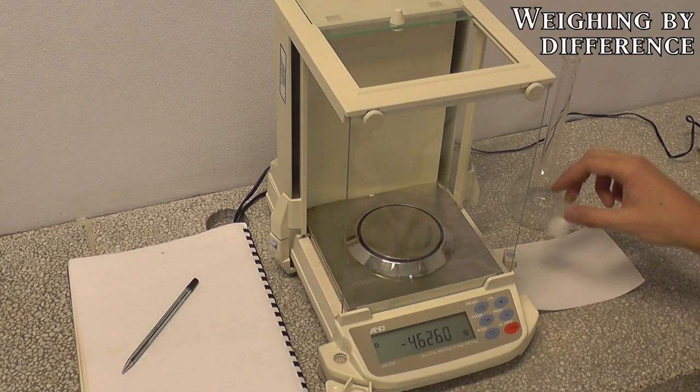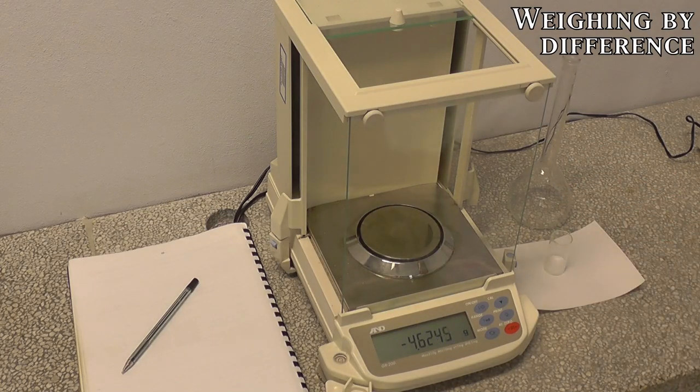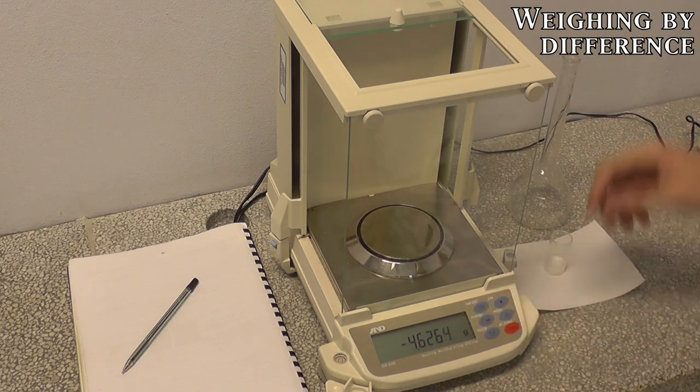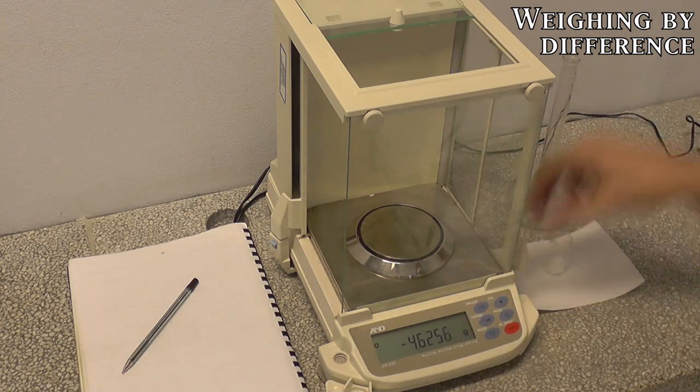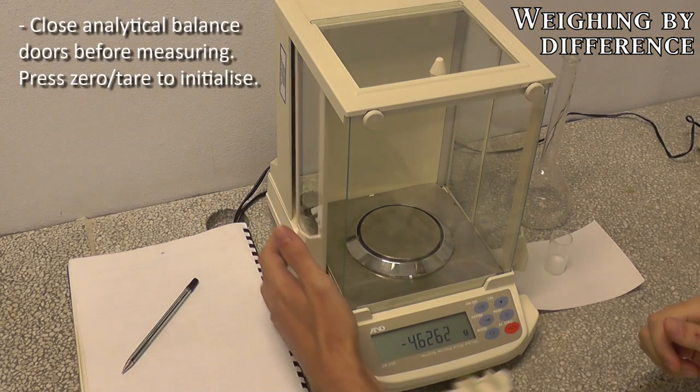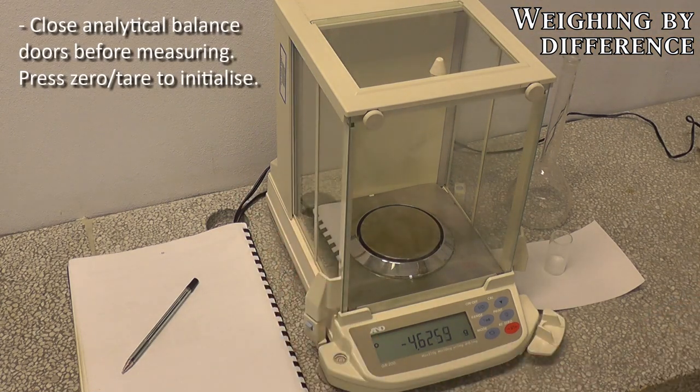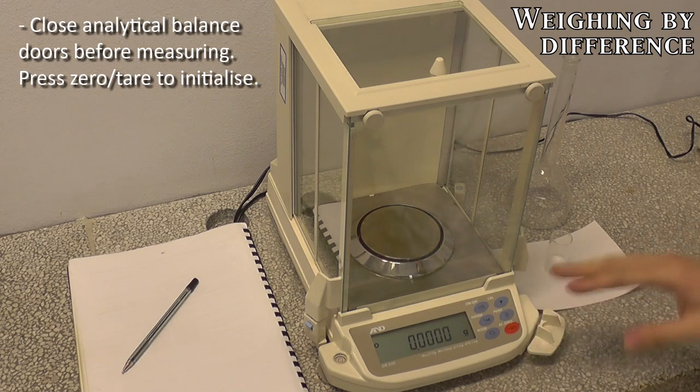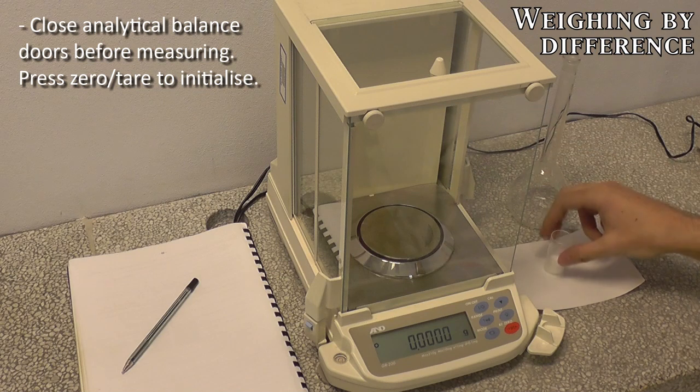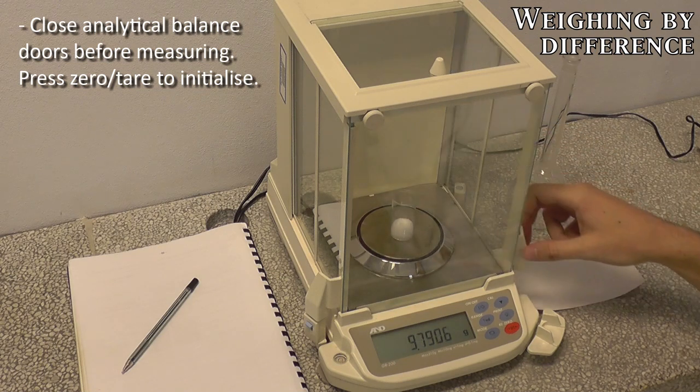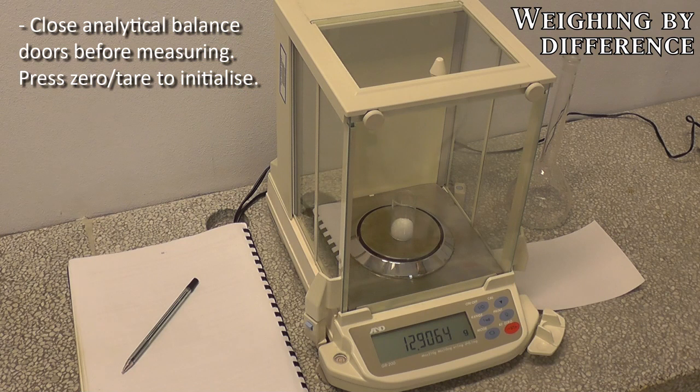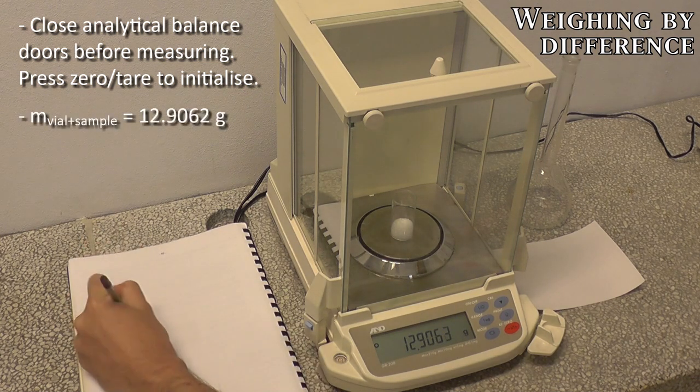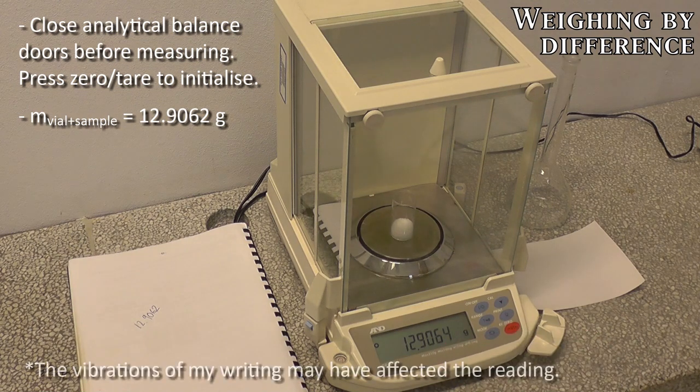Next we bring our sample over to the analytical balances. These are very sensitive scales that are even detecting the microchanges in air pressure. You'll see that they have several doors, and it's a requirement that you close all of them before you start any measurements. When you come to the analytical balances, the first thing you want to do is re-zero the scale, or tare the scale, and once that's done, we can stick in our sample. The first mass we're going to record is the mass of the vial plus our total sample, which in my case is 12.9062, and I'm going to write that number down. Don't worry if this number fluctuates, that's not too important.